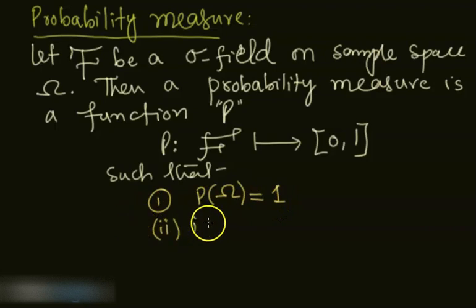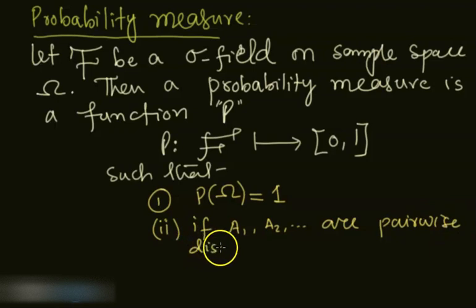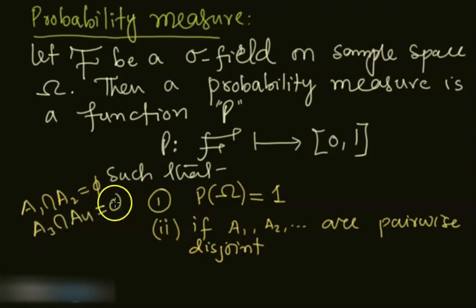And then if A1, A2, A1, A2, are pairwise disjoint, that means A1 intersection A2 is empty, A3, A4 is also empty. So you are taking any two in pairs, their intersection is going to be empty. In other words, Ai intersection Aj is empty for every i and j where i and j are not equal to each other.